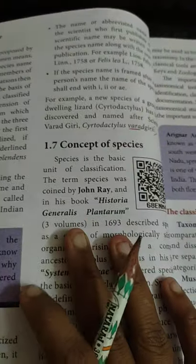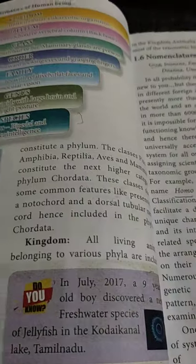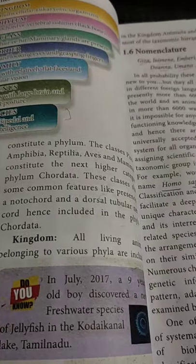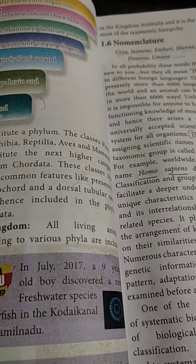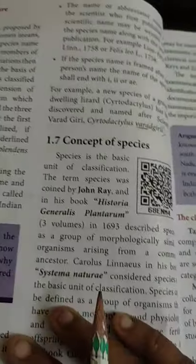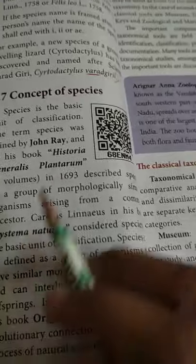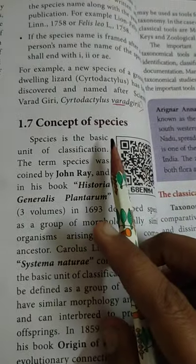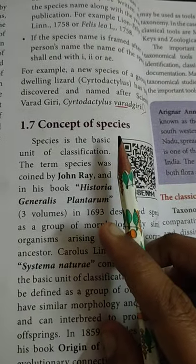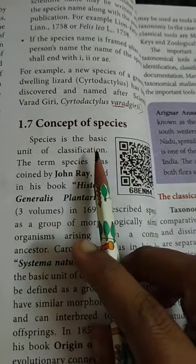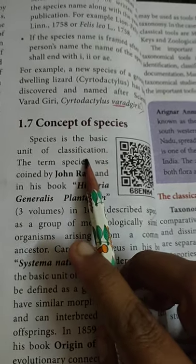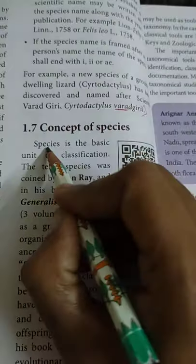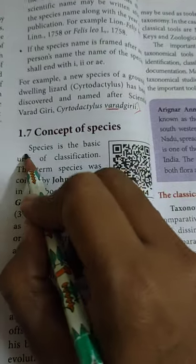Good morning students. In the last class we learned about nomenclature — binomial nomenclature and trinomial nomenclature. Now the concept of species: species is the basic unit of classification.